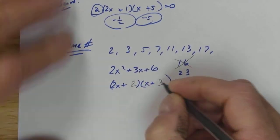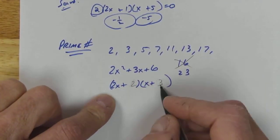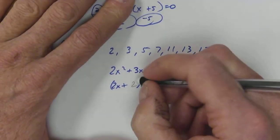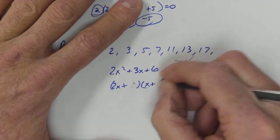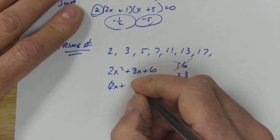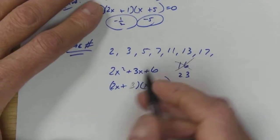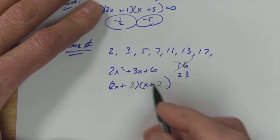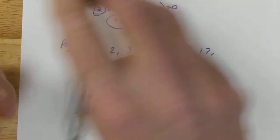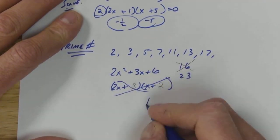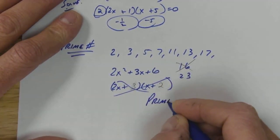2 and 3. 2 and 6 gives me 8. That does not work. Flip my 3 and my 2. 3 and 4 gives me 7. That does not work.